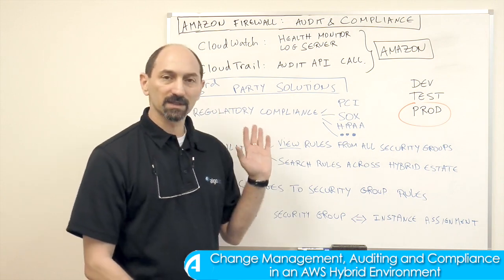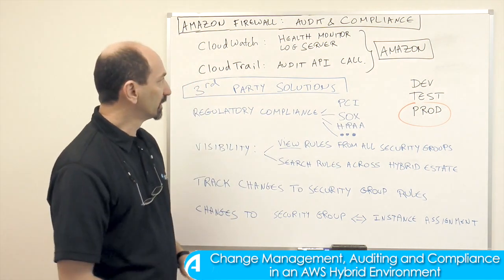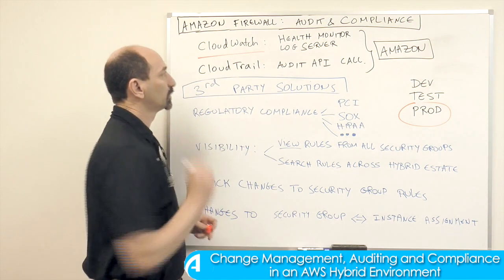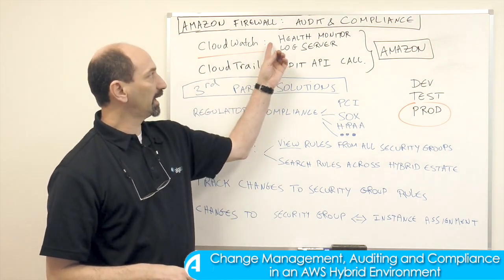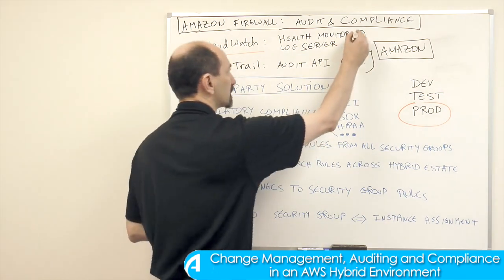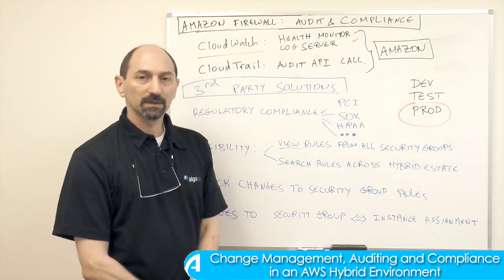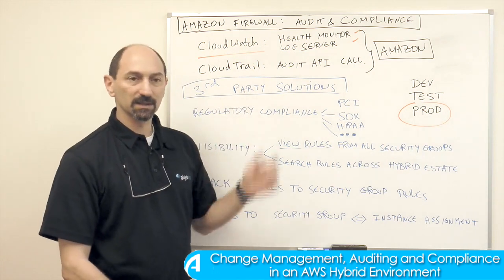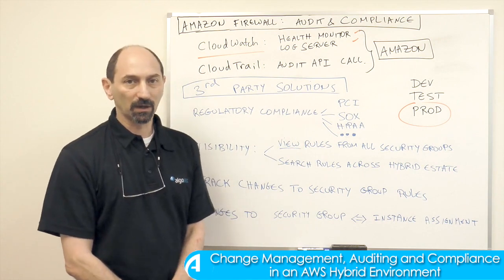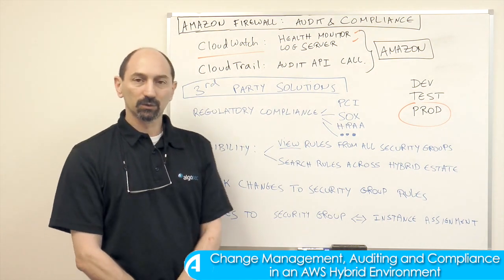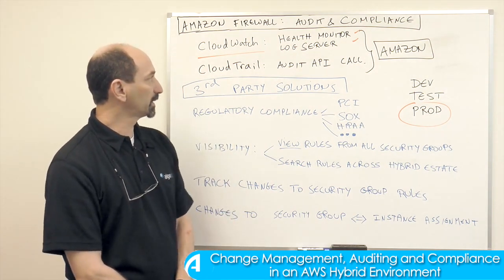So let's look at a few things that you have at your disposal. There are some offerings from Amazon that you could use and are relevant. First we have a tool called CloudWatch. This is an offering from Amazon that is basically a health monitor and a log server for your instances. It lets you track the operational setting and status of each of the instances to see if they're running out of resources, if they're generating syslog messages and alarms — a useful tool mostly for an operational environment, less so for an audit capability.